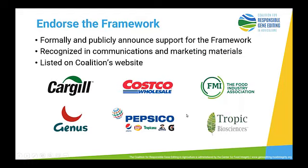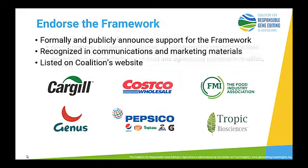As we formally launch and publicly talk about the framework, we are very pleased to have six organizations that have publicly endorsed it: Cargill, Costco, FMI (the Food Industry Association), Genus — which is in the livestock genetic business — PepsiCo, and Tropic Bioscience. You can see a variety of interests, whether food companies, retailers, international companies, or developers from plants or animals. We hope this core group of endorsers will encourage others to give it consideration as we launch and move forward.